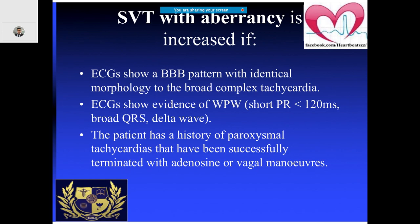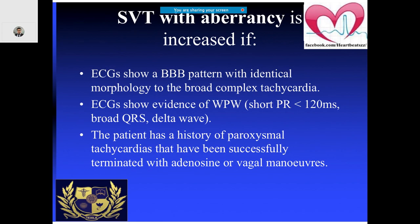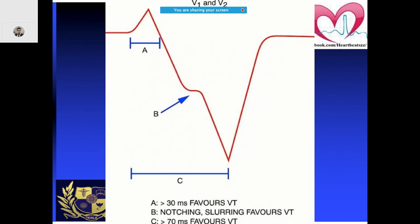One of the other confusions is whether it is SVT with aberrancy. A lot of times we may come across ECGs showing a bundle branch block pattern in which the morphology is similar to broad complex tachycardia. You will also need to look at some of the signs which I had already mentioned — what are the signs pointing toward VT?